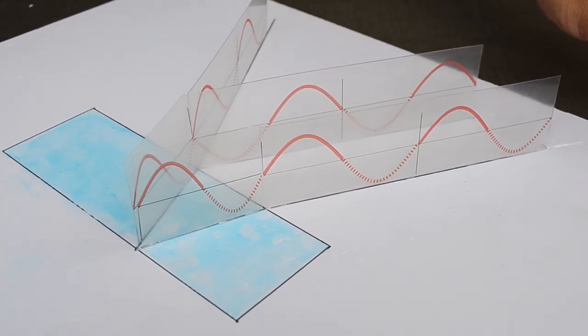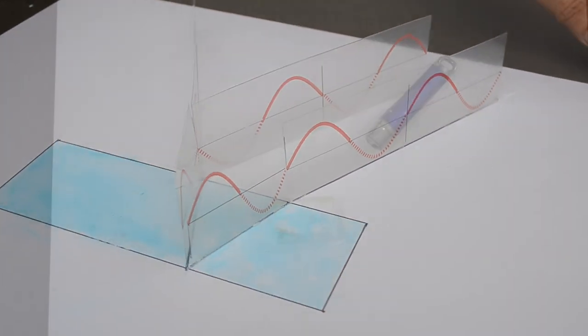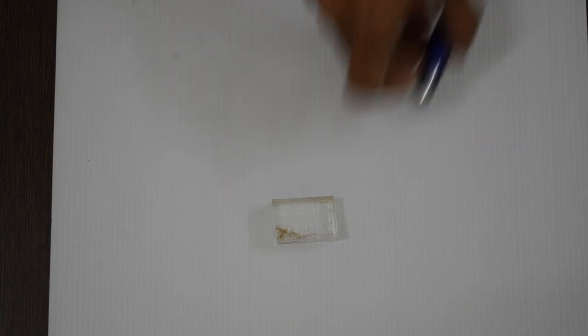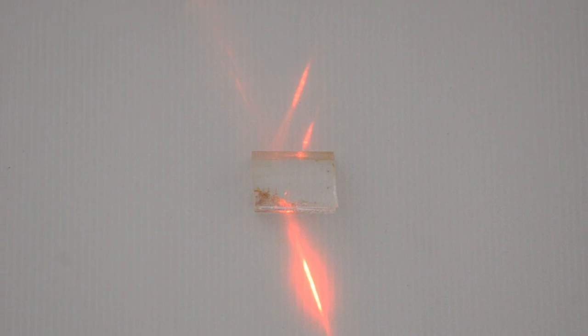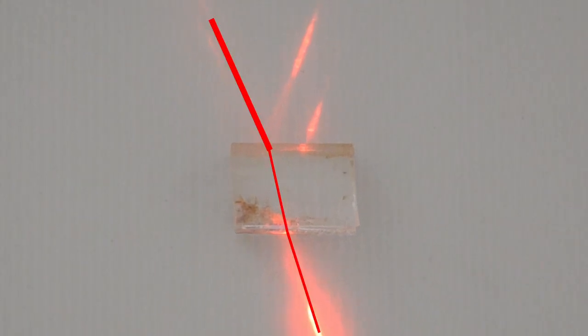As usual, let us revisit the key concepts. When red laser light is projected on the transparent acrylic block, light gets reflected as well as refracted. Medium through which light travels changes at these locations.